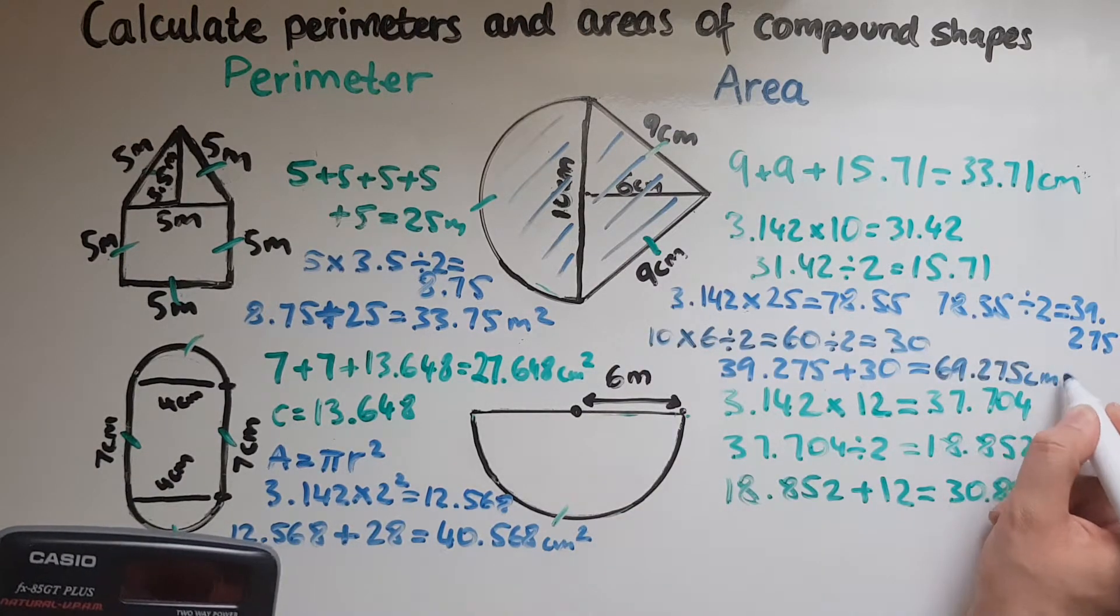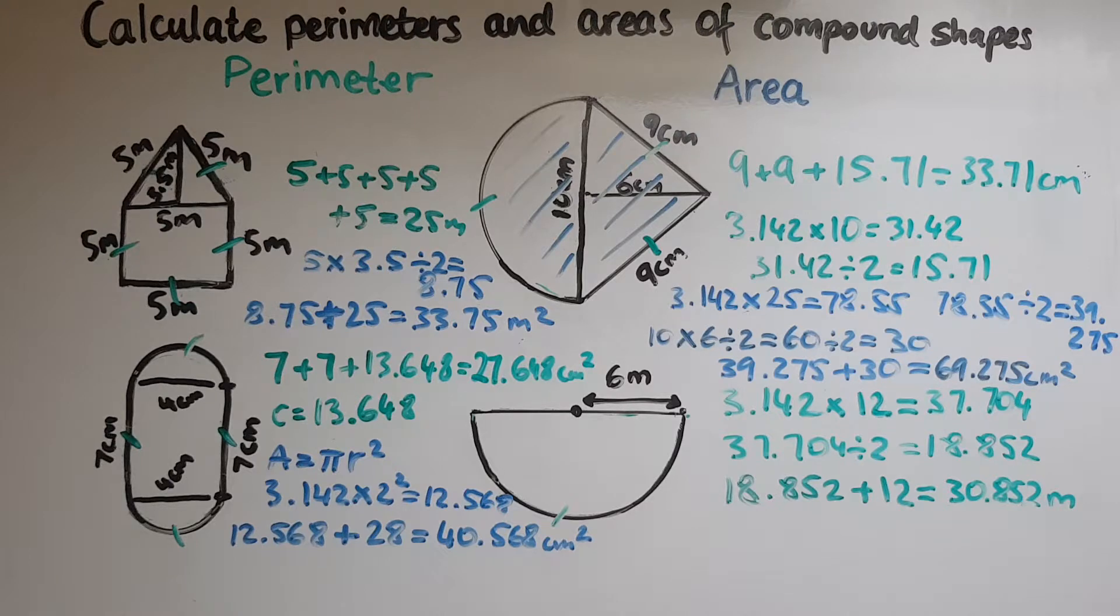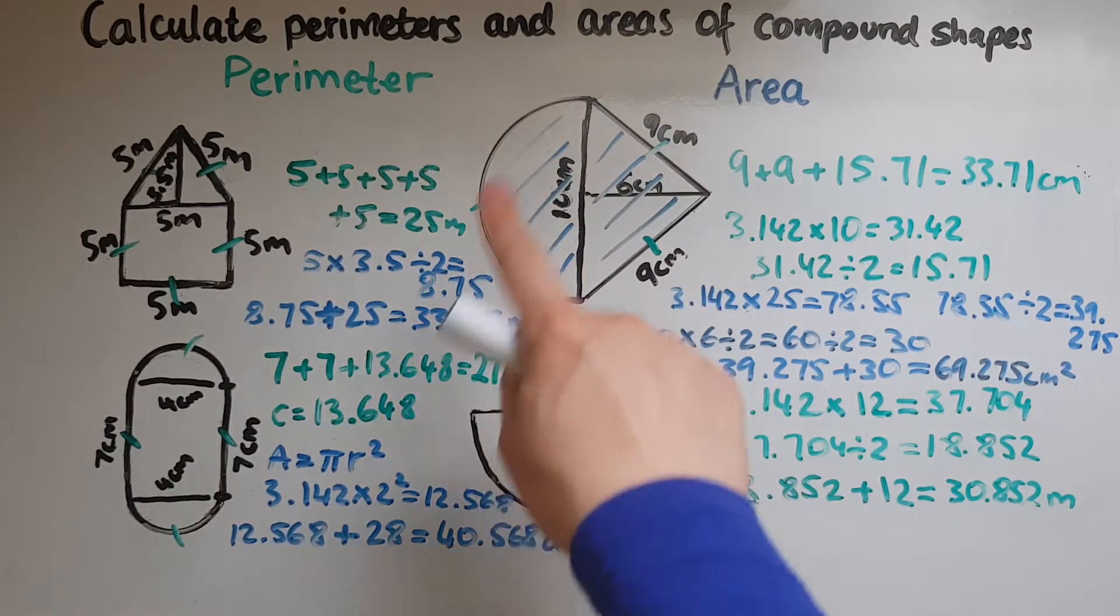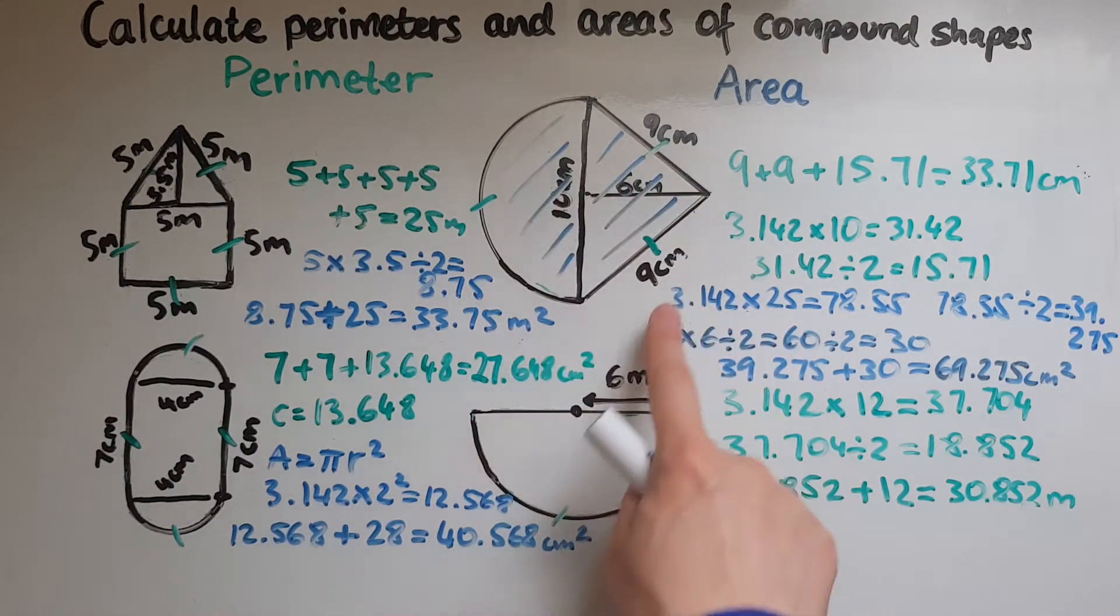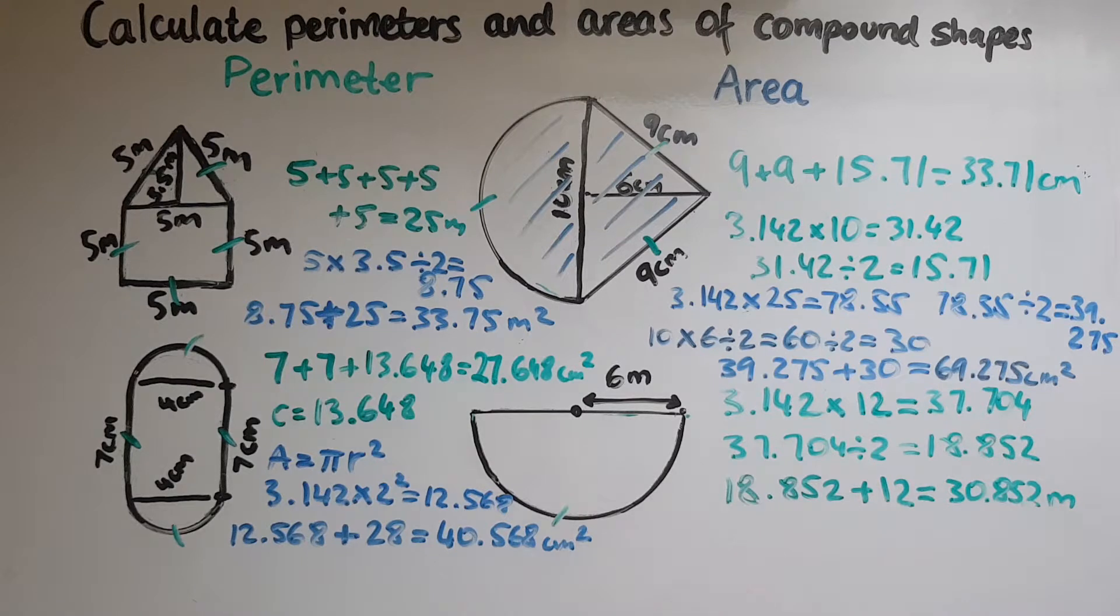This makes now sixty nine point two seven five centimeters squared. If we have different units we'd have to convert them first before calculating. We didn't have that in this case, all of them were centimeters so the output was in centimeters as well.